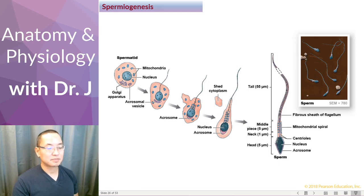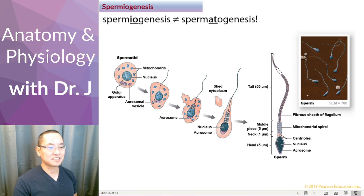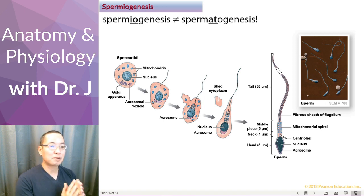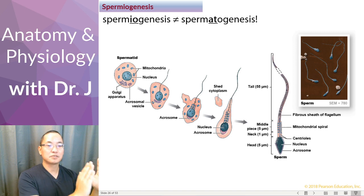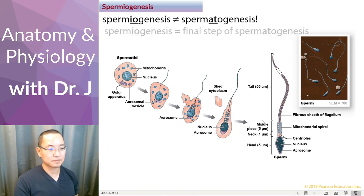What we have here is spermiogenesis. Spermiogenesis is not the same as spermatogenesis — they are different. Actually, spermiogenesis is part of spermatogenesis. Spermatogenesis is the entire process, whereas spermiogenesis is only the very last step before you finally form sperm.